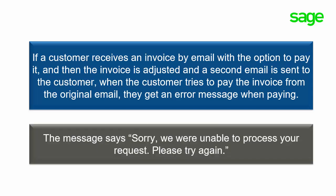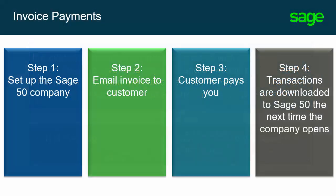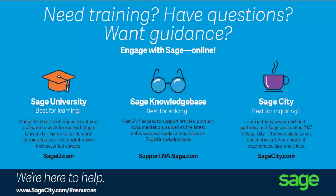The error message says: "Sorry, we were unable to process your request, please try again." You now know what Invoice Payments is and how to set up the Sage 50 company to use it, what invoices you send to your customers look like, and how your customers can easily pay you.